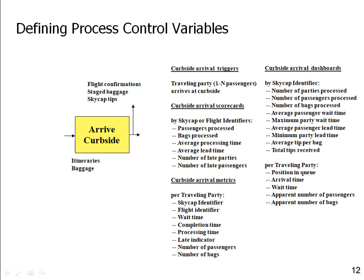Here's the set of control variables I might define. The curbside arrival trigger: a traveling party of one-to-N passengers arrives at the curbside. For the scorecard reported to management, I might report data by skycap or by flight: the number of passengers processed, number of bags processed, average processing time, average lead time, how many parties were late for check-in, and how many passengers were late. I track both parties and passengers because a large party of ten people arriving late impacts the late-passenger metric far more than just being one party.